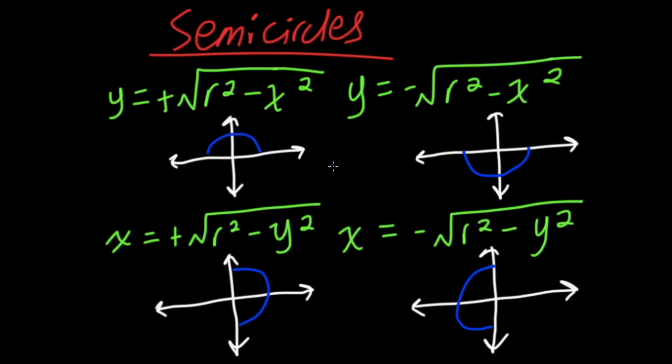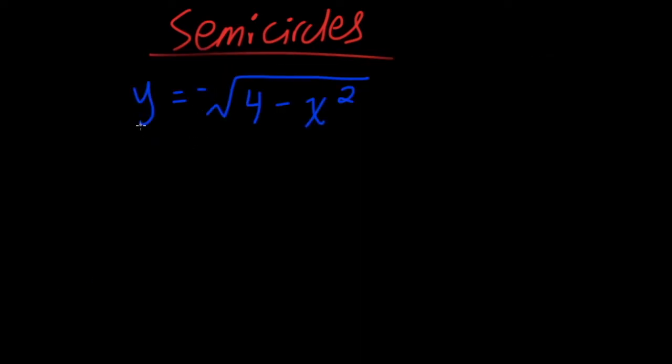And that's the four main types of semi-circles we can get. Now, let's look at an example of how to graph one. So, for this first example, we have y equals negative root 4 minus x-squared. If you remember before, this 4 represents our radius squared.